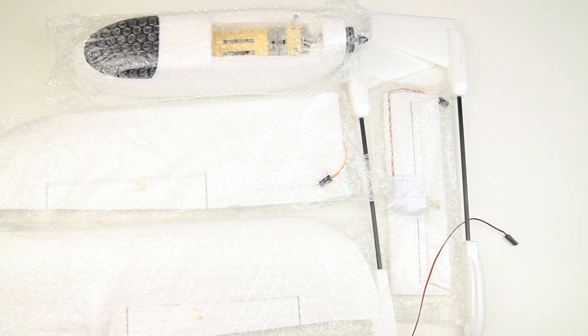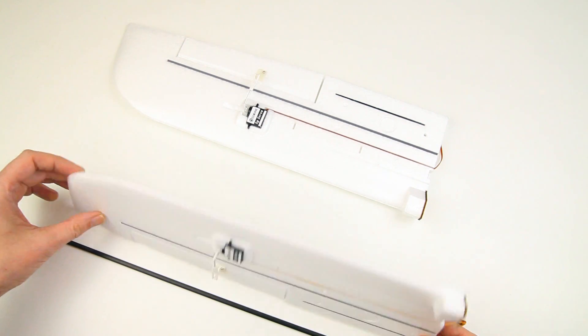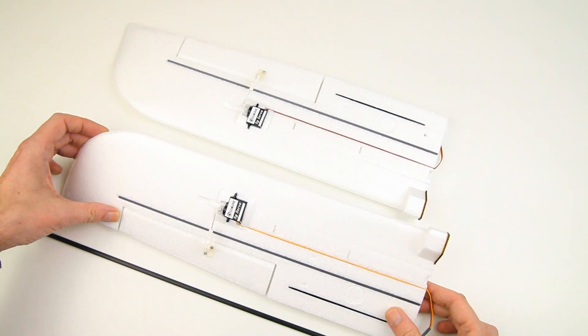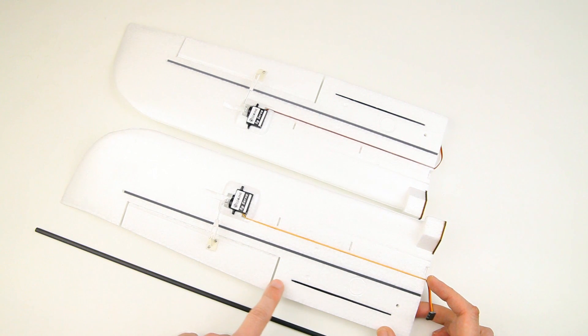So once again, very good packaging on this plane, very nice. Now let's take a closer look at the components. First thing, the two wings - and yes, very small wings of course, it's a micro plane. Let's see, carbon reinforcement, that's nice, some more carbon reinforcement.